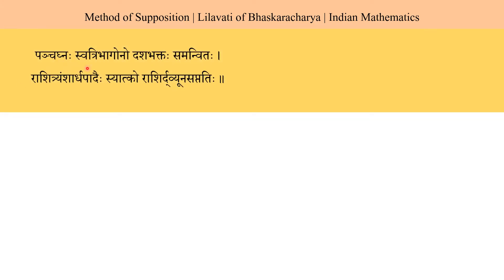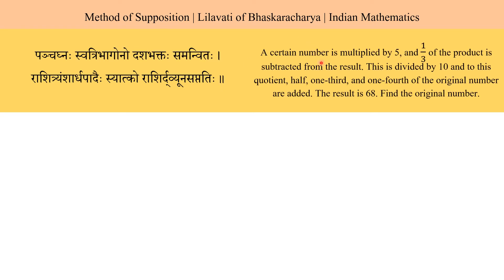Panchajna swatri bhagono dashabhaktas samanvitaha rashitriyam shardha padaisyat ko rashir dhiyuna saptatihi. A certain number is multiplied by 5 and one-third of the product is subtracted from the result. This is divided by 10, and to this quotient, half, one-third, and one-fourth of the original number are added. The result is 68. Find the original number.